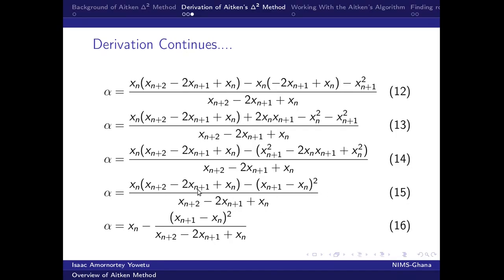Which gives rise to equation 15. We then divide through, we split the terms, divide this one by this which we got this, and then we maintain this one over this which gives rise to this. And then equation 16 is our Aitken's method.